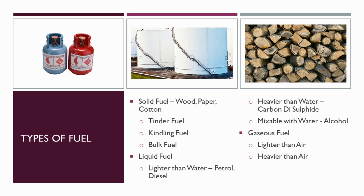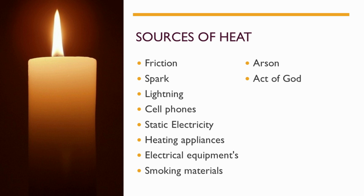The third important factor in the fire triangle is heat, so we need to know about sources of heat. Sources of heat can be anything that creates ignition — examples include friction, sparks, lightning, cell phones, static electricity, heating appliances, electrical equipment, smoking materials, arson, and acts of God. Arson means someone deliberately creating a fire.